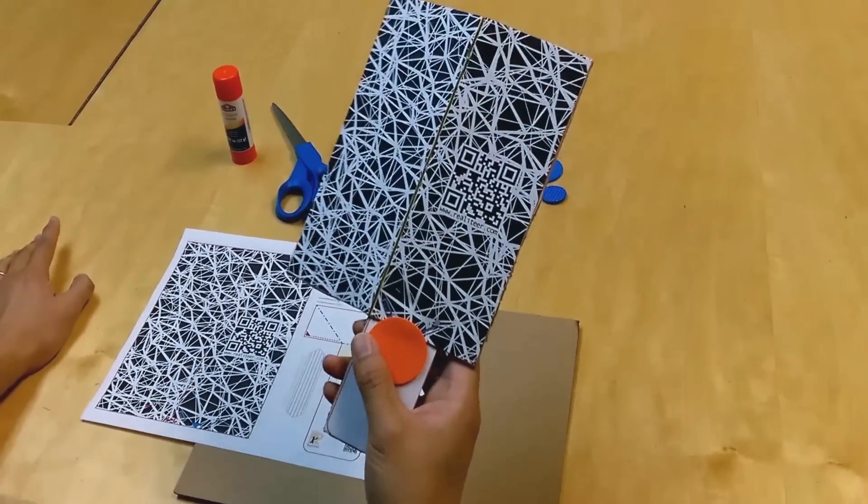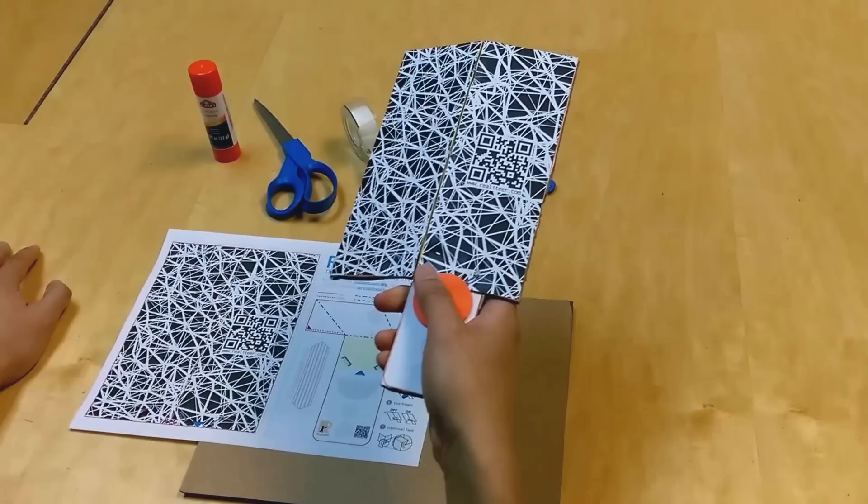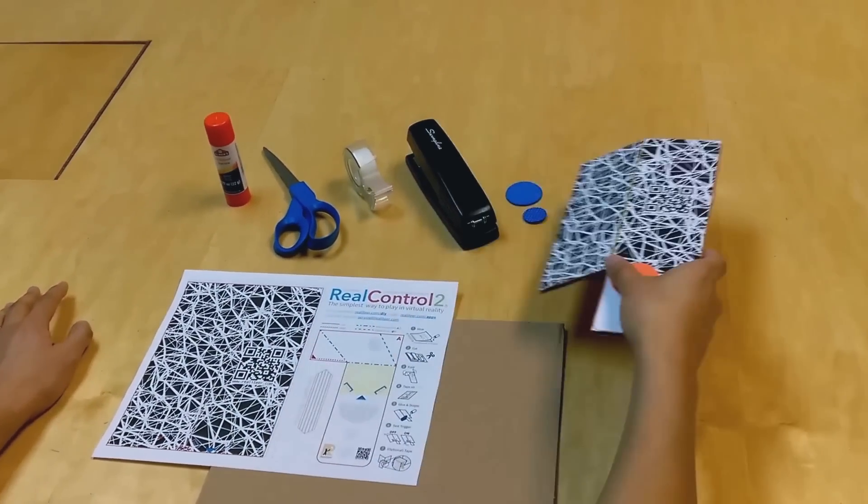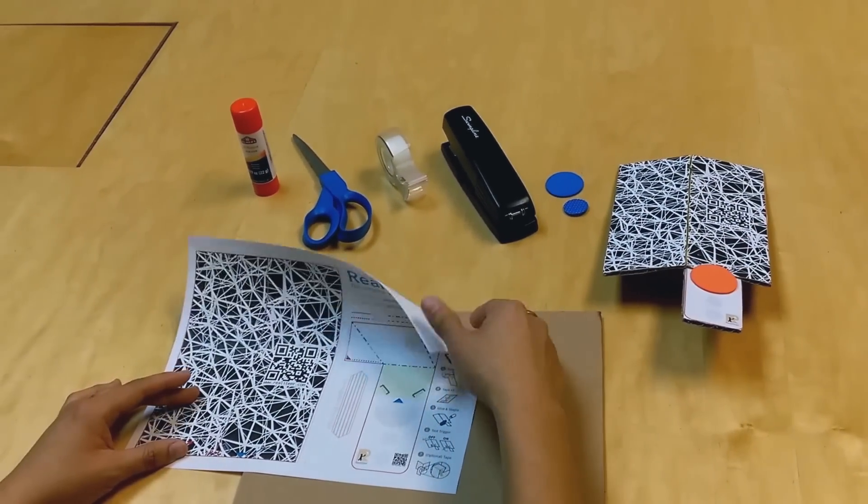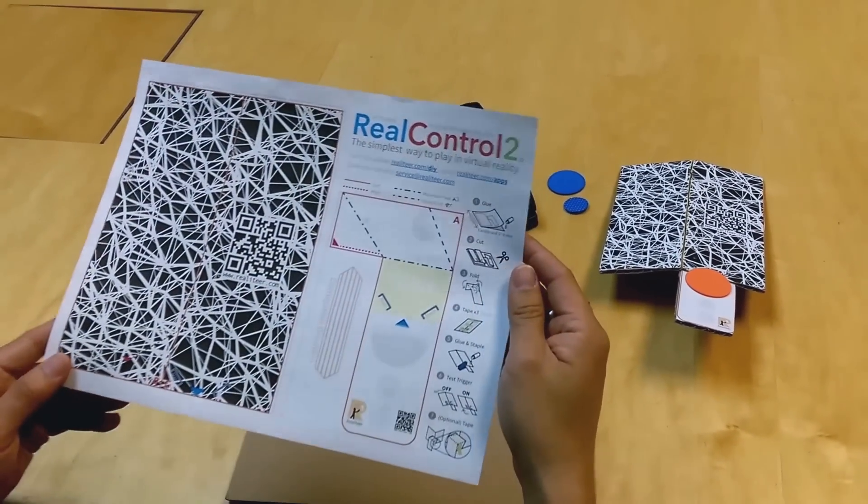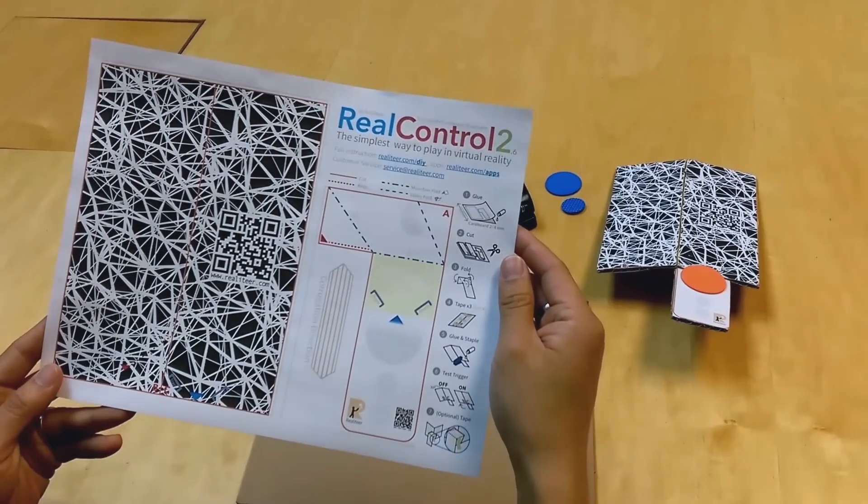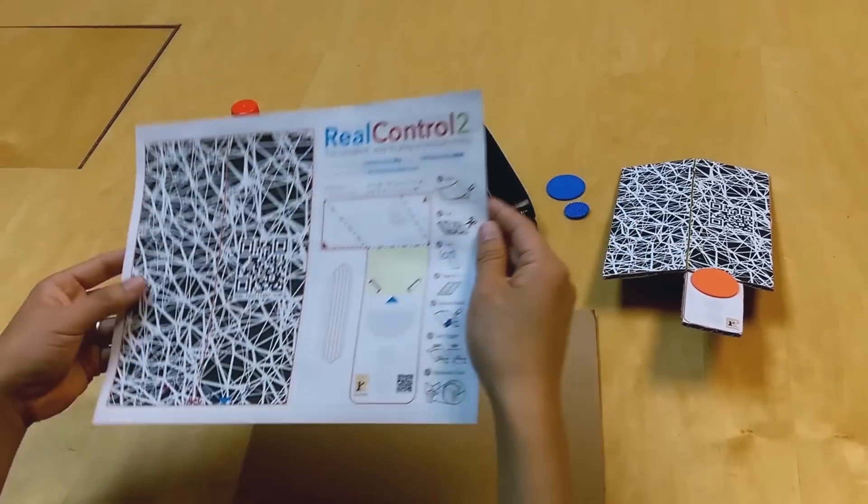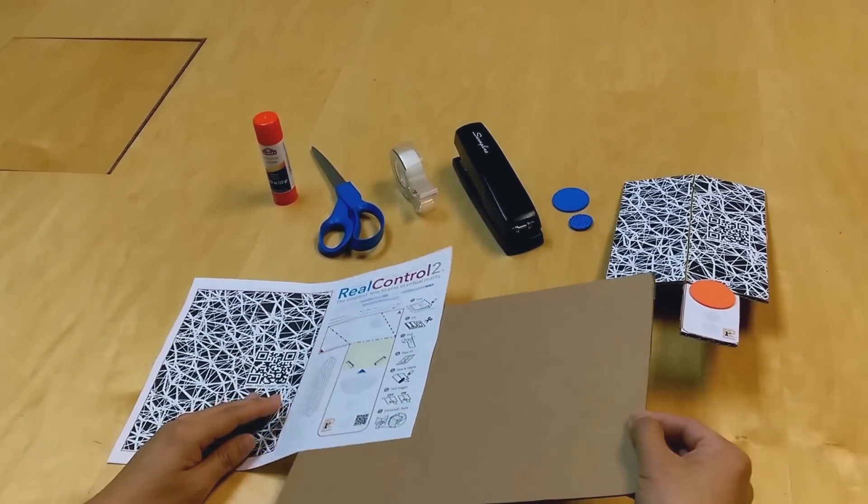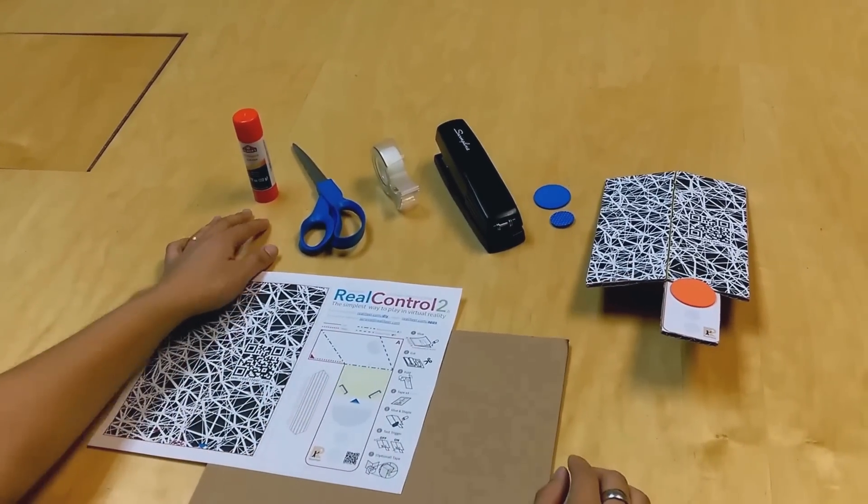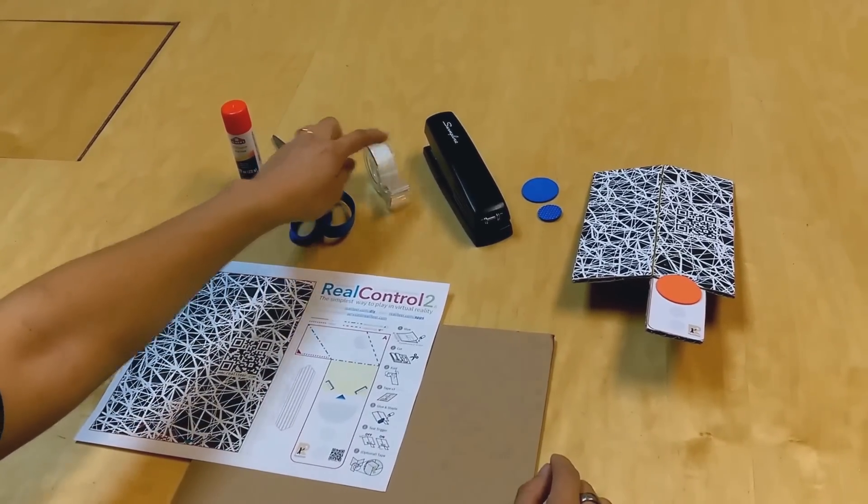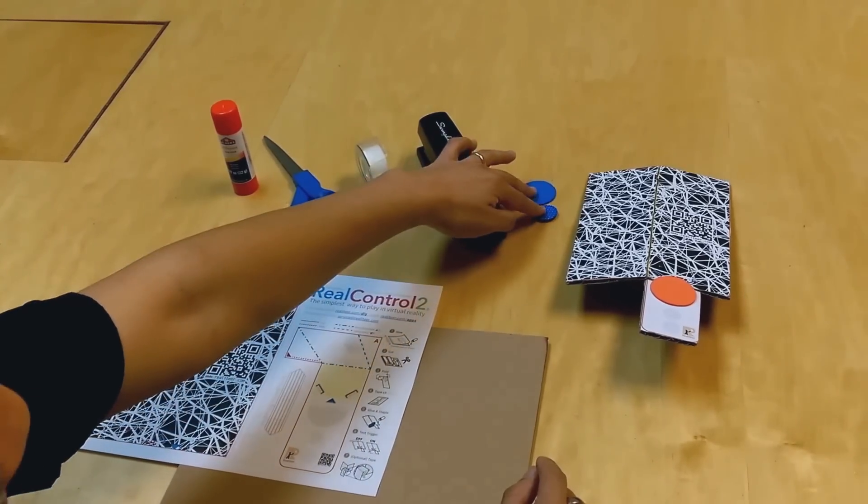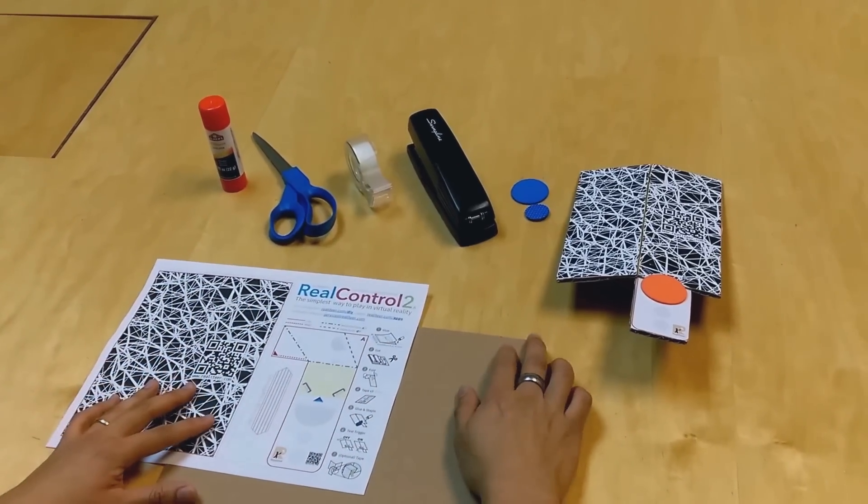Hello. In this video, we're going to show you how to make a real control tool. To start, you need to download the blueprint from our website at realitya.com/DIY. You need a piece of cardboard, glue gun, scissors, tape, stapler, and any kind of decoration you want to put on your controller.